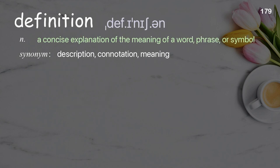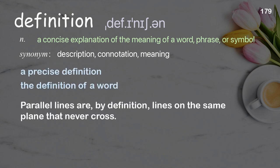Definition: a concise explanation of the meaning of a word, phrase, or symbol. Examples: a precise definition, the definition of a word. Parallel lines are, by definition, lines on the same plane that never cross.